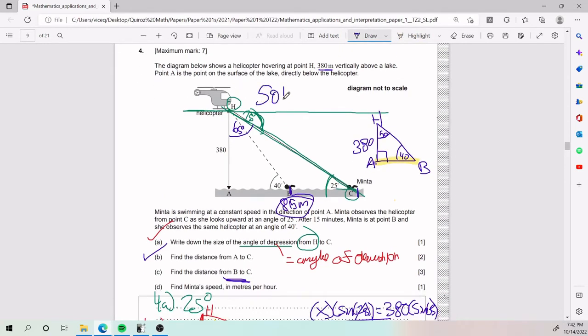So SOHCAHTOA, I'm sure you've heard of it, makes reference to sine, cosine, and tangent. So since we know all of these angles, we have to play around with that. We also have to play around the fact that we have this distance here. And so for our TOA, our tangent, the tangent of 40, its opposite is 380, its adjacent is AB, which is exactly what we're trying to find. So what does this translate to?